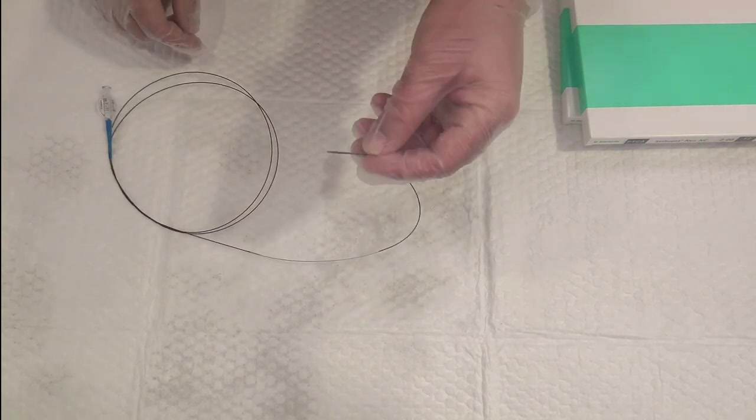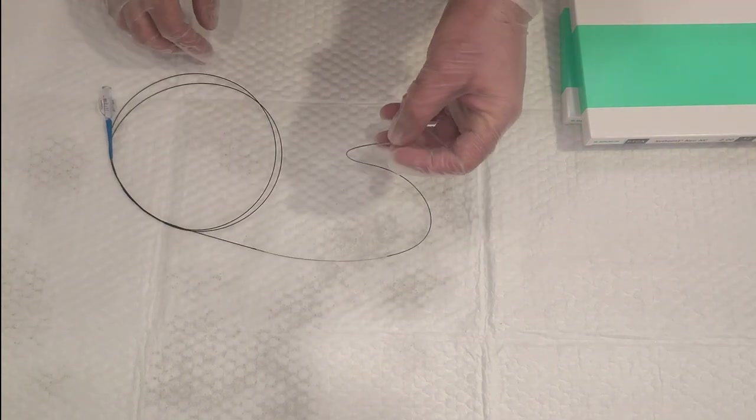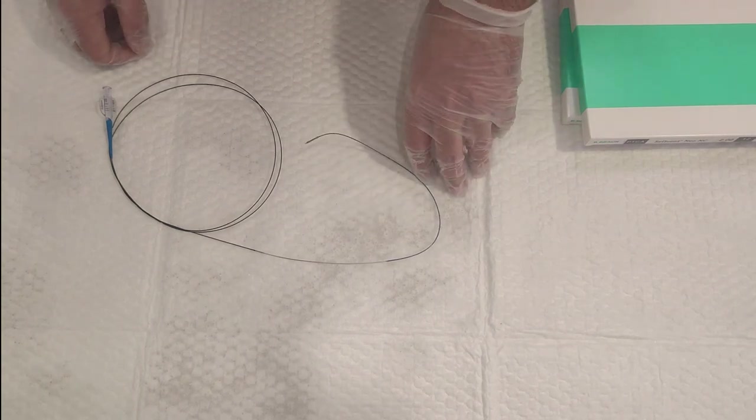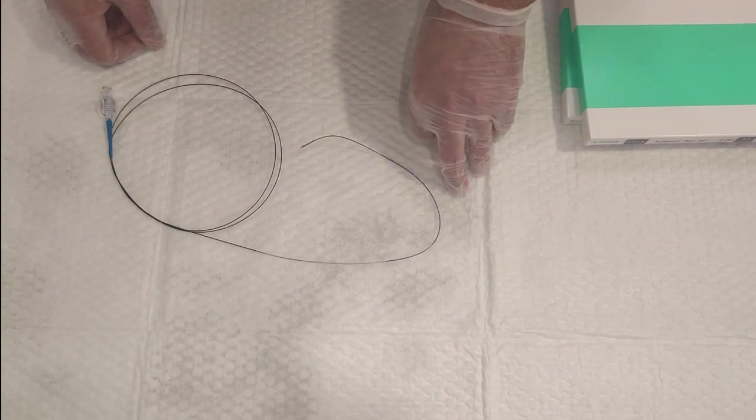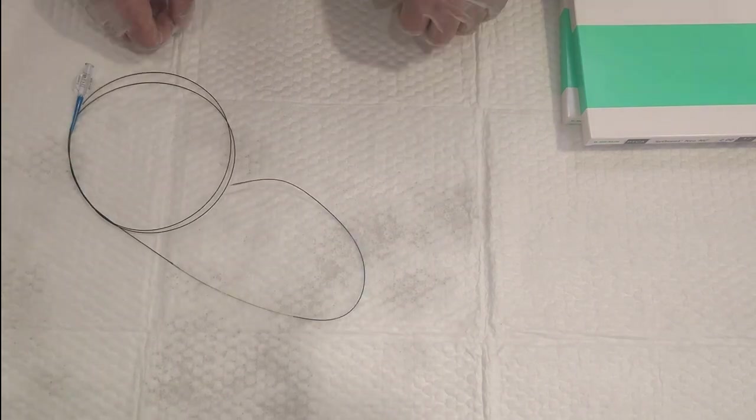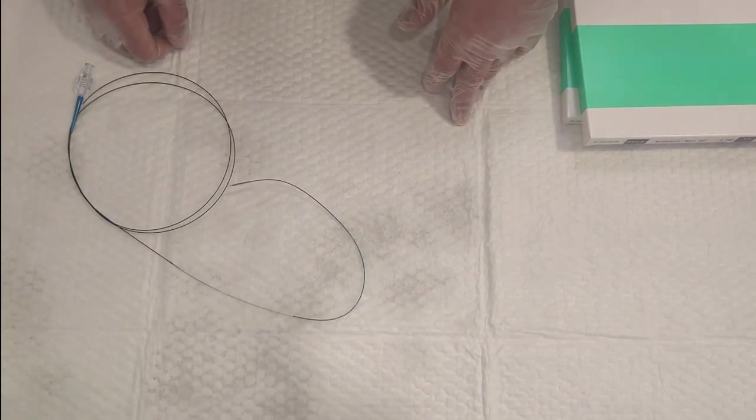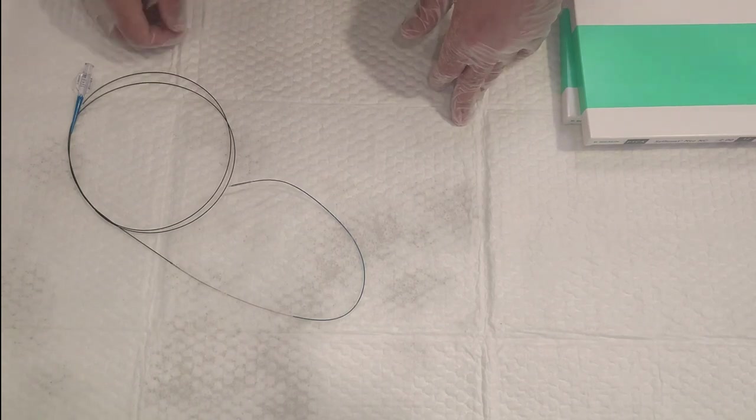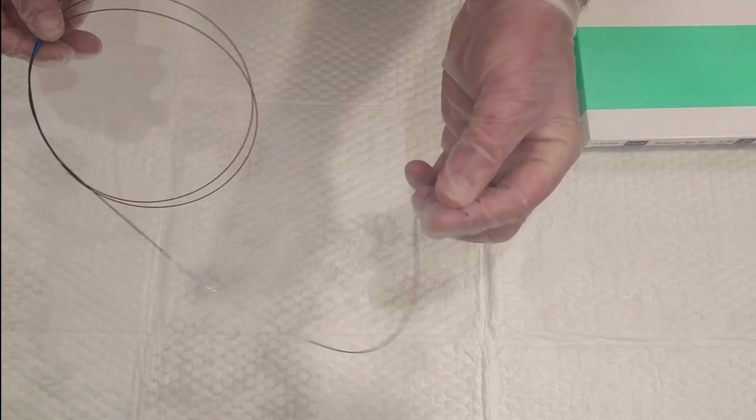There are other types as well - one is called the cutting balloon, one is called the scoring balloon, and another is called drug-eluting balloons. There are different sorts of balloons for coronary procedures. I will make a separate video regarding the scoring balloon or the cutting balloon, but let's today talk about a compliant balloon.